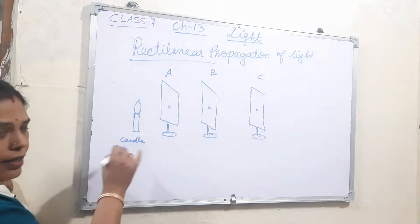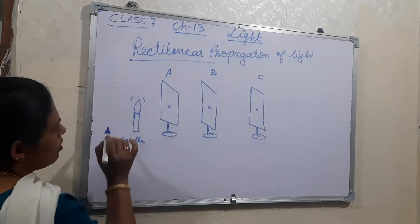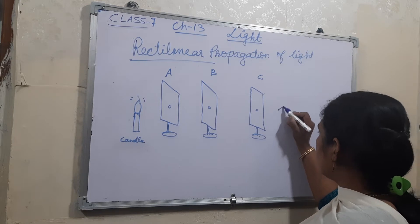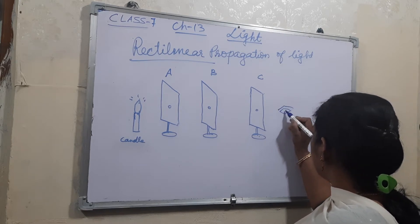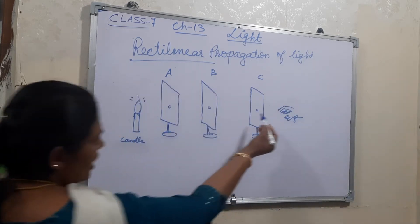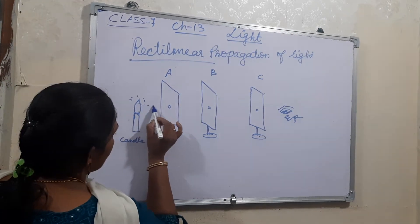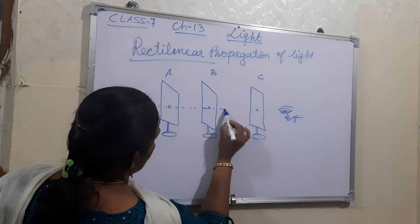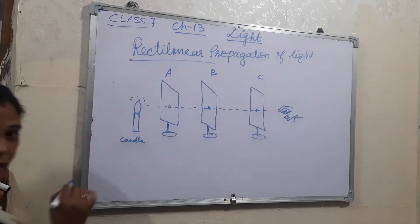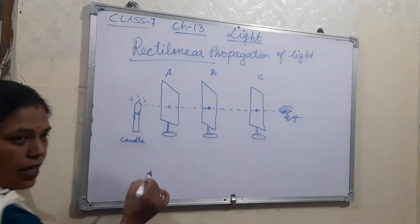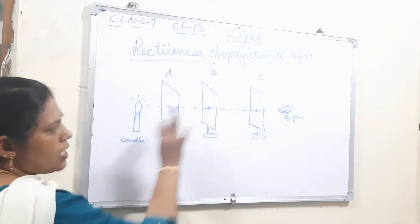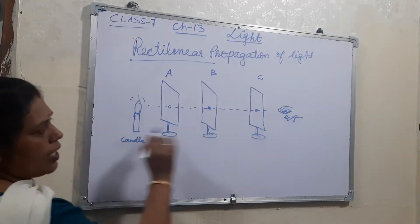Now I light the candle. Then it will light up. Through these three holes you can see with your eyes. If you are able to see the light through these holes, that means the light is moving in a straight line — the flame is visible through all three holes.